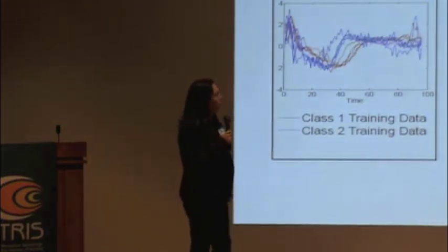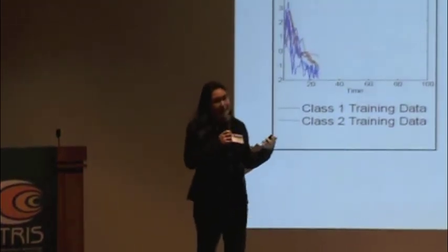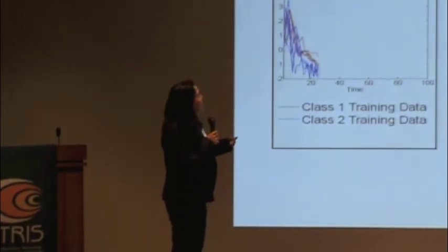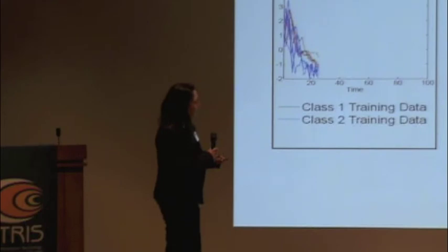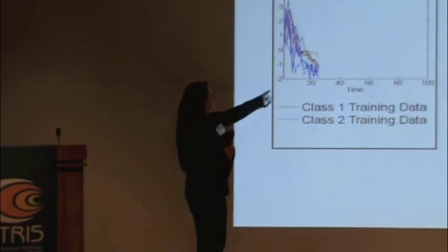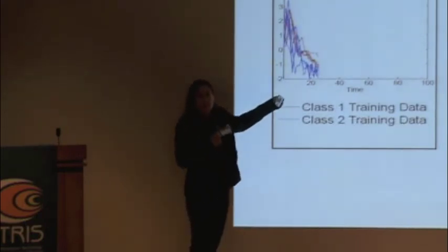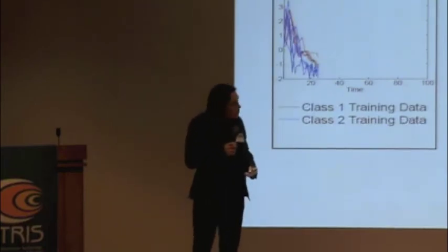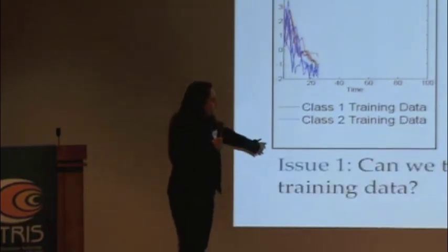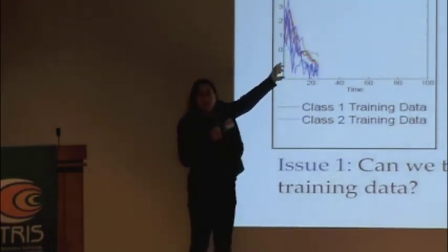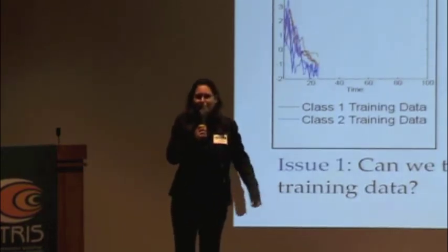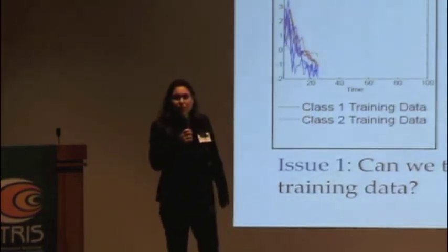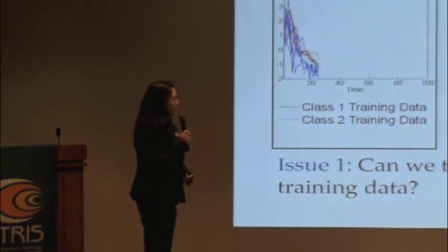What do we do when we don't have the full time series? A naive approach is that if you want to test at time t, you just build a classifier based on training data up to time t. If I'm testing on data up to time 23, I'll just use labeled training data up to time 23. The first issue is we do have the future of the training data — can we use that to our advantage? And I'll show in this talk that yes, we can get away with taking advantage of that.